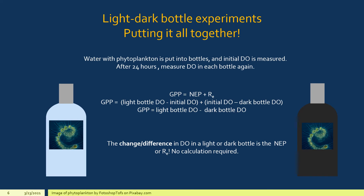The change in DO in the light bottle is NEP, and the change in DO in the dark bottle is RE. So if you're told the difference between the initial and the light bottle DO, you automatically know NEP. If you're told the difference between the initial and the dark bottle DO, you automatically know RE — without any additional calculations. Keep track of all these equations and what each measurement represents.